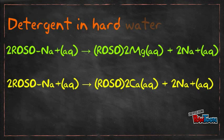Basically, detergent forms scum in hard water. This is because the sodium ions will bind to the calcium and magnesium ions that are present in hard water.